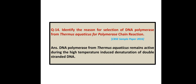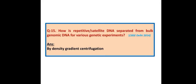Identify the reason for selection of DNA polymerase from Thermus aquaticus for polymerase chain reaction. Answer: DNA polymerase from Thermus aquaticus remains active during the high-temperature-induced denaturation of double-stranded DNA. How is repetitive or satellite DNA separated from bulk genomic DNA? Answer: By density gradient centrifugation technique.